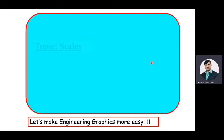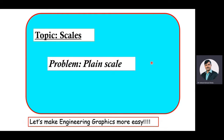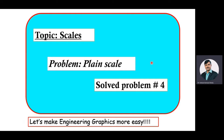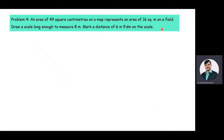We are in the discussion of the scales topic. Under scales topic, we are going to solve a problem on plain scale. This is the fourth solved problem we are discussing under plain scale. The given problem is: an area of 49 square centimeters on a map represents an area of 16 square meters on a field. Draw a scale long enough to measure 8 meters, and mark a distance of 6 meters and 9 decimeters on the scale.